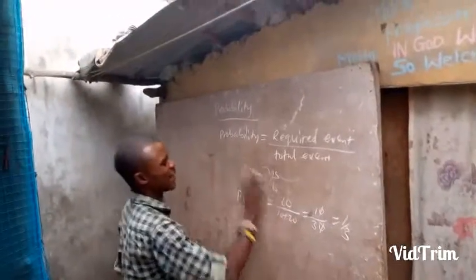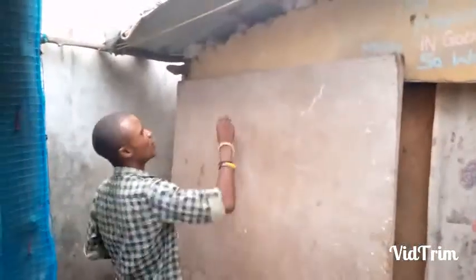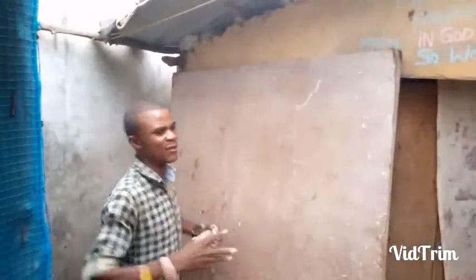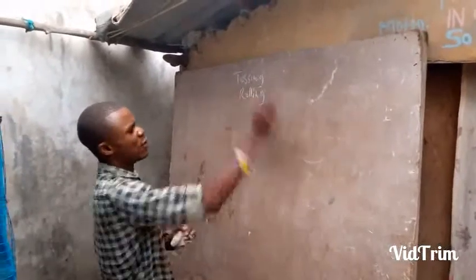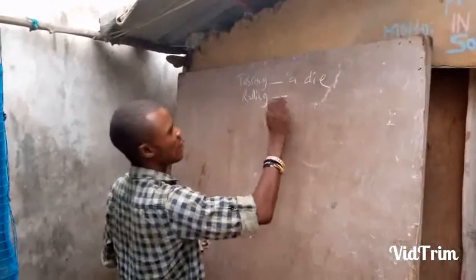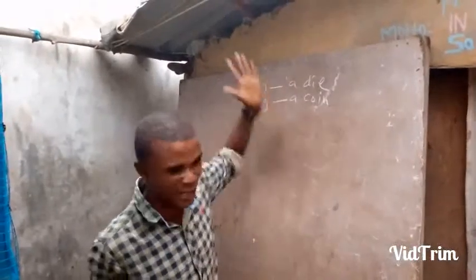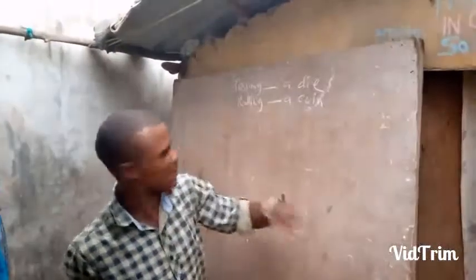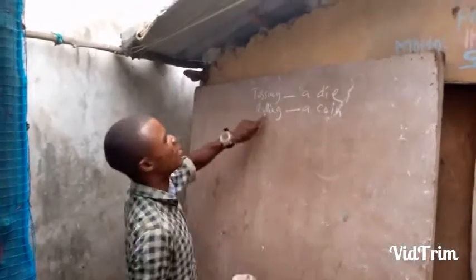There are terms used to describe probability. We depend on two registers here: we use the word 'tossing' and we have 'rolling.' Depending on the object, you toss a coin and you roll a die. But these terms can be interchanged — you can say tossing a coin or rolling a die.